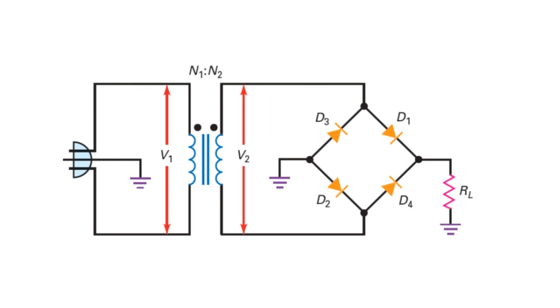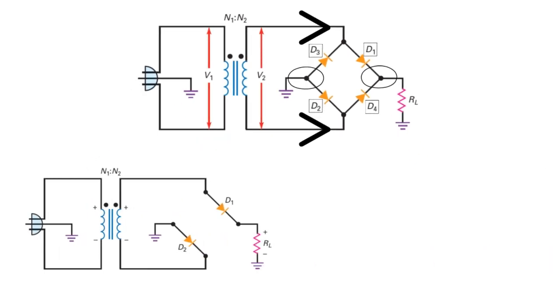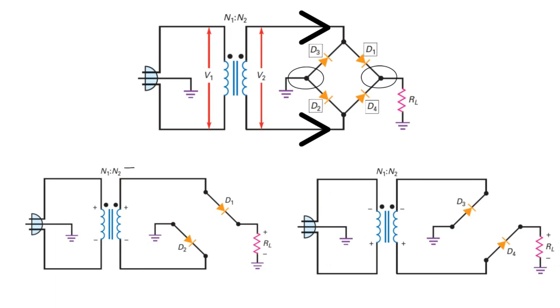Now we'll have a quick view on the working of the bridge rectifier. If you see this diagram, there are four connection points. These two are connected to the input and these two are connected to output. Let's name these diodes as D1, D2, D3, and D4. During positive half cycle, the diode D1 gets forward biased and current flows through this direction, and the circuit gets closed through this diode D2.